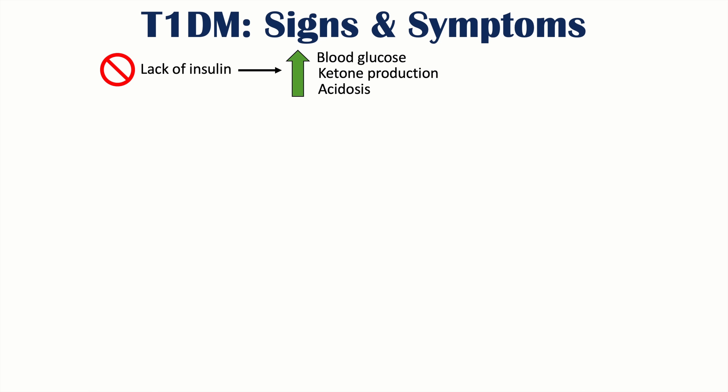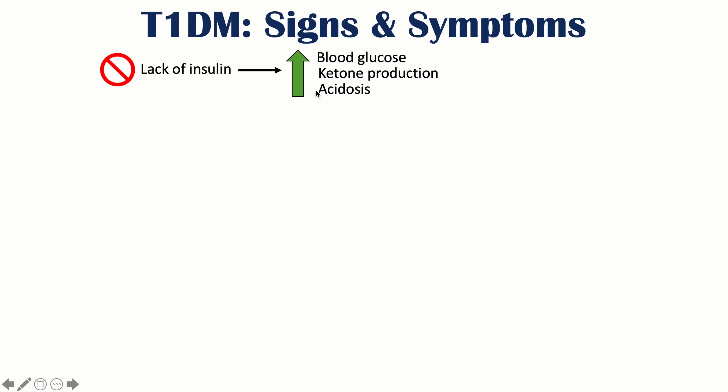Now let's talk about diabetic ketoacidosis. In type 1 diabetes, insulin production is severely compromised or completely absent, leading to increased blood glucose and increased ketone production due to increased fat breakdown. This does not occur in type 2 diabetes because insulin is still present to inhibit glucagon. Without insulin, glucagon increases and leads to increased fat breakdown, increased ketone production, and acidosis.